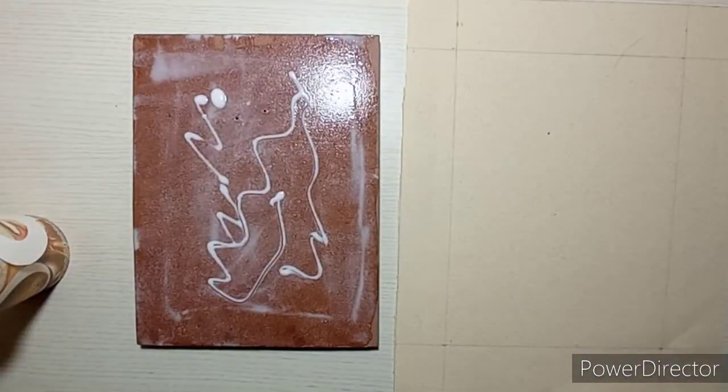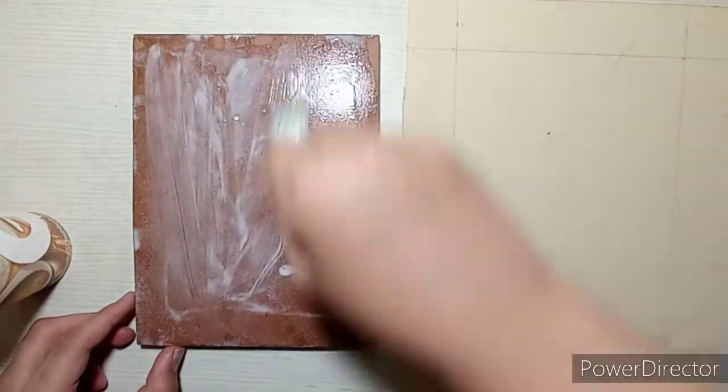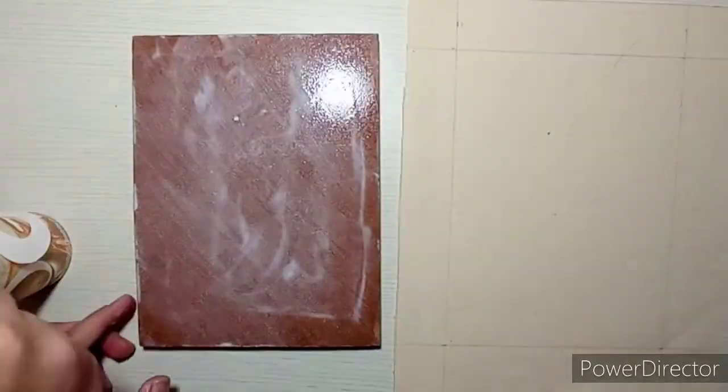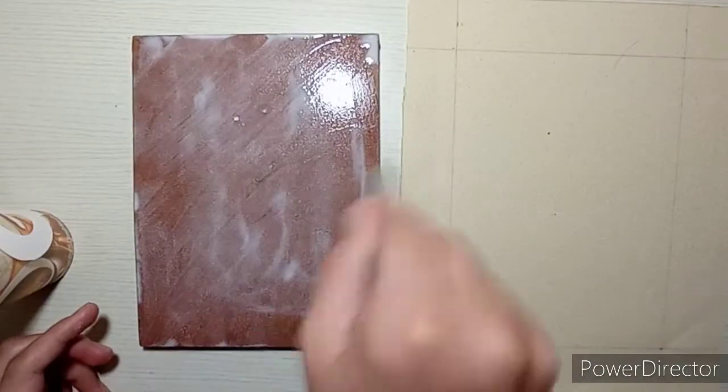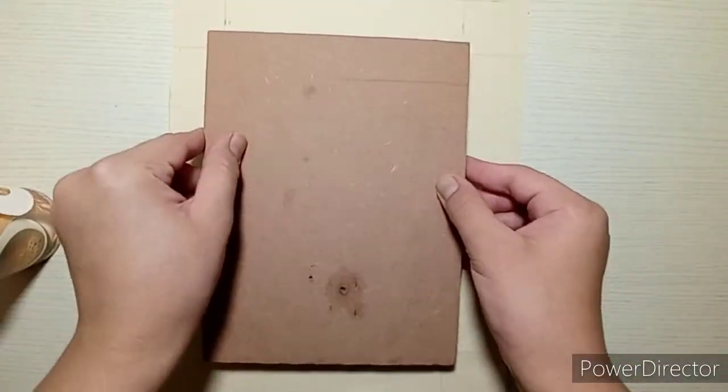Now I'm going to add some more white glue to make it extra strong. You can also do diagonal strokes to ensure that it is applied very evenly. Now you're going to take the wooden plank and fix it on the canvas sheet.